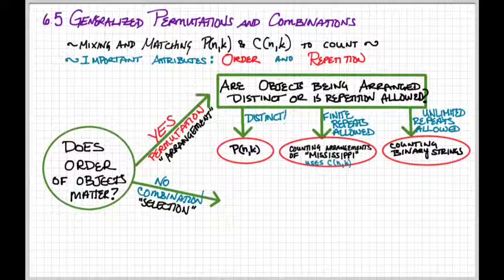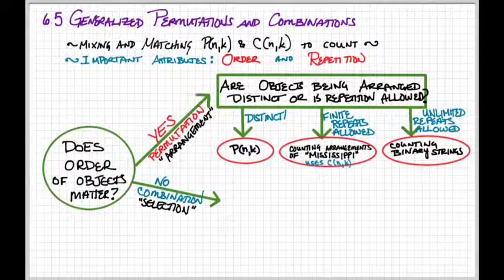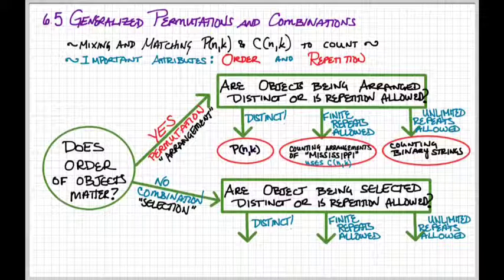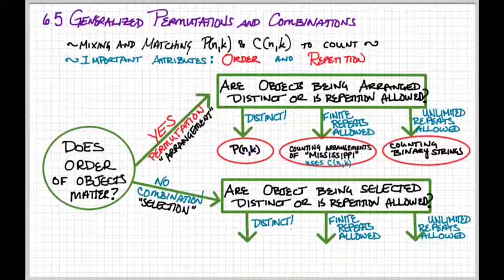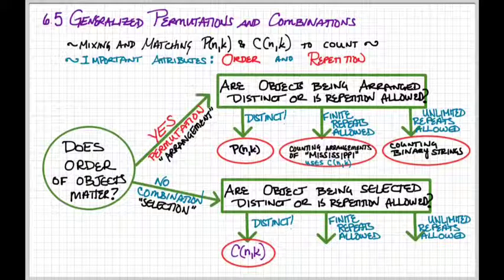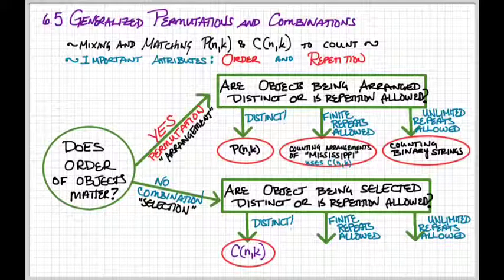If order doesn't matter, then we're looking at a combination and we're making some kind of selection. But we can also ask the same question about: are my objects distinct, are finite repetitions allowed, or do I have unlimited repetitions? If the objects are distinct, you're looking at the straightforward combination, C of N,K, or N choose K.